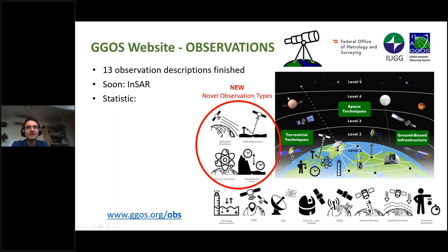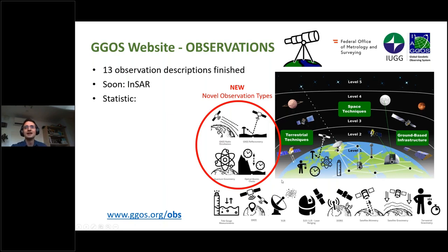The next part is the observation descriptions. We have now finished 13 observation descriptions, and the INSA description will hopefully be published soon. We also published four or five descriptions during the last two weeks. The new descriptions are GNSS radio occultation, GNSS reflectometry, quantum gravimetry, and optical atomic clocks, and also the tide gauge measurements were published in the last two weeks.